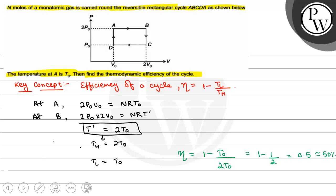So efficiency of the cycle will be 50%. Hope you all understood it well. Best of luck.